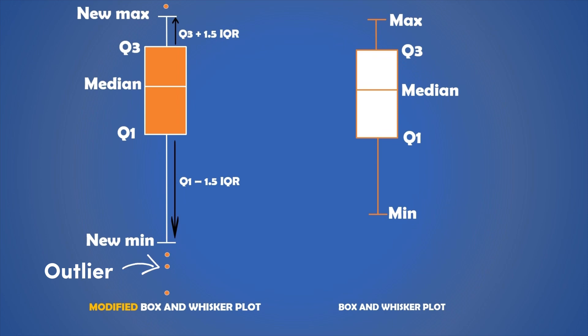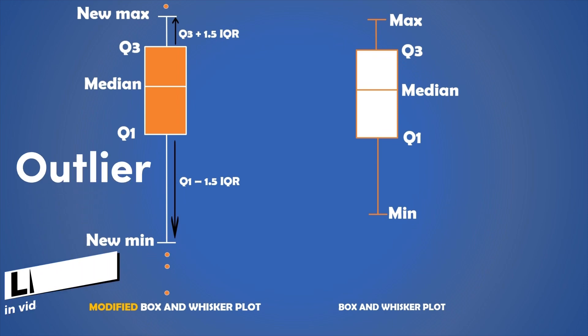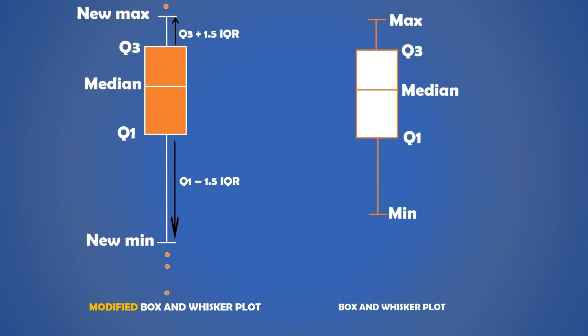If you want to learn more about modified box plots, check out my full video about interpreting box and Whiskers plots. Links in the card above and in the description of this video. The outliers are represented by data points after the new minimum or the new maximum.